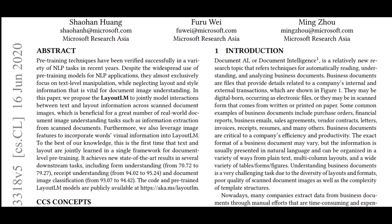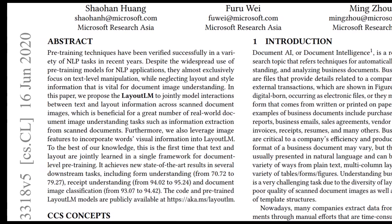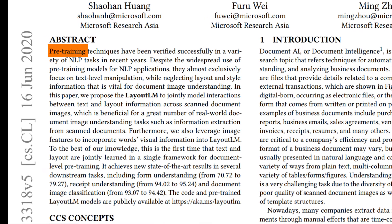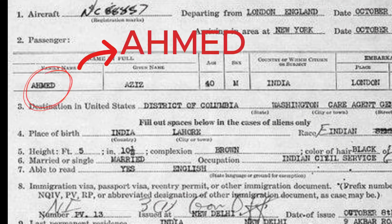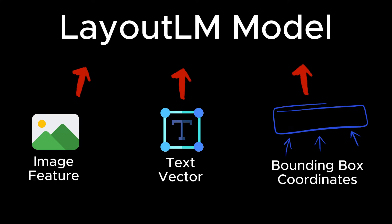As mentioned in the abstract, pre-training techniques have been verified successfully in a variety of NLP tasks in recent years. LayoutLM leverages image features to incorporate words and visual information into the model. This was the first time text and layout were jointly learned in a single framework at the document level.